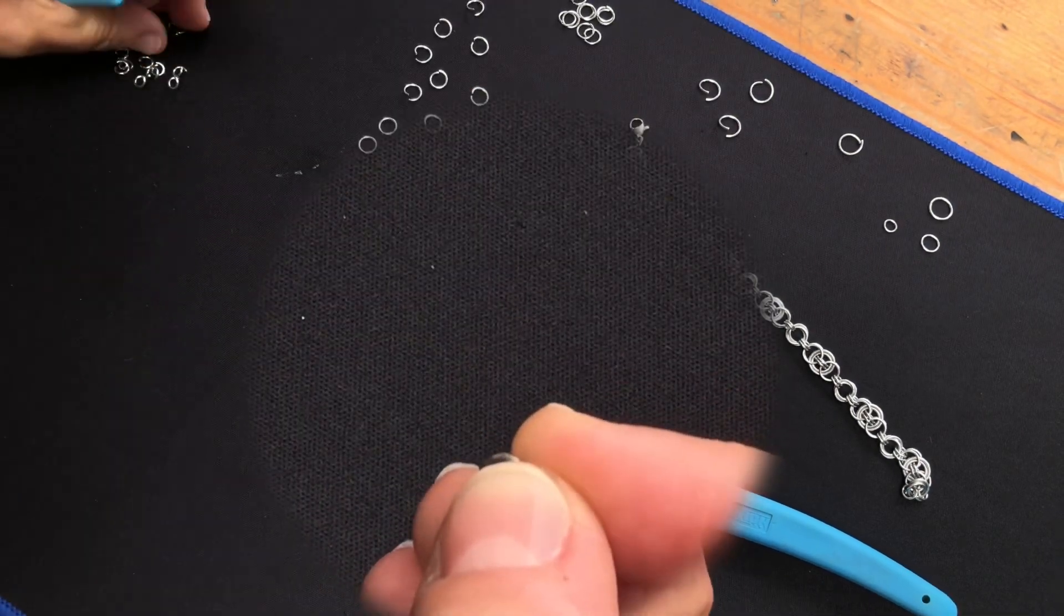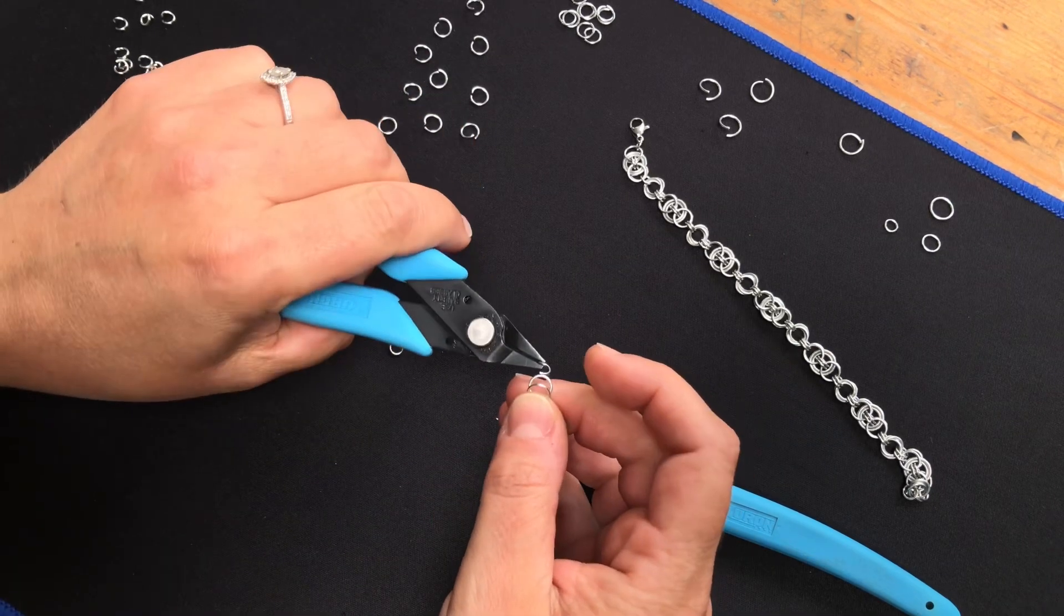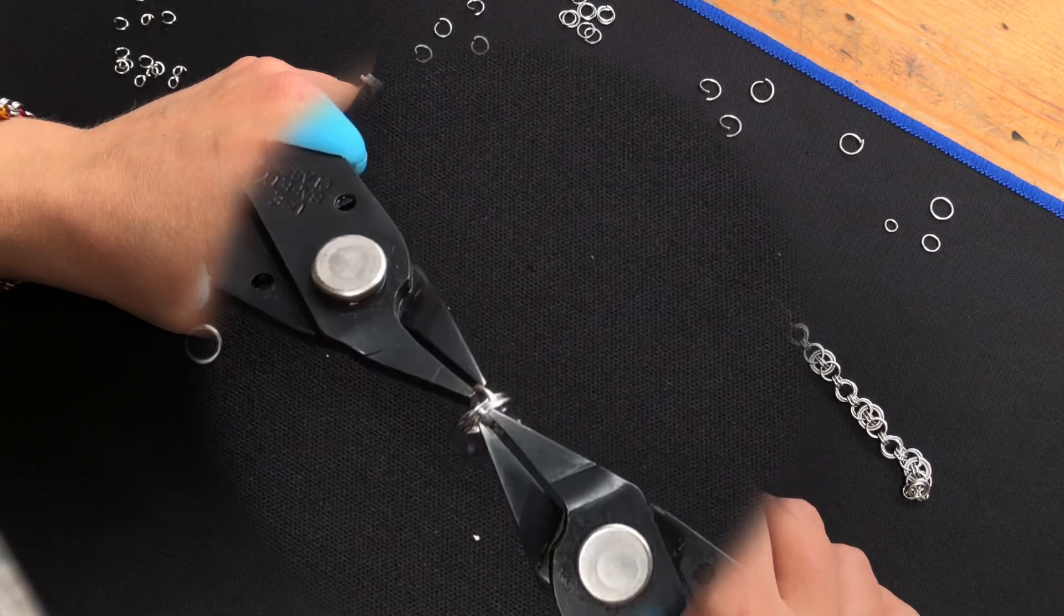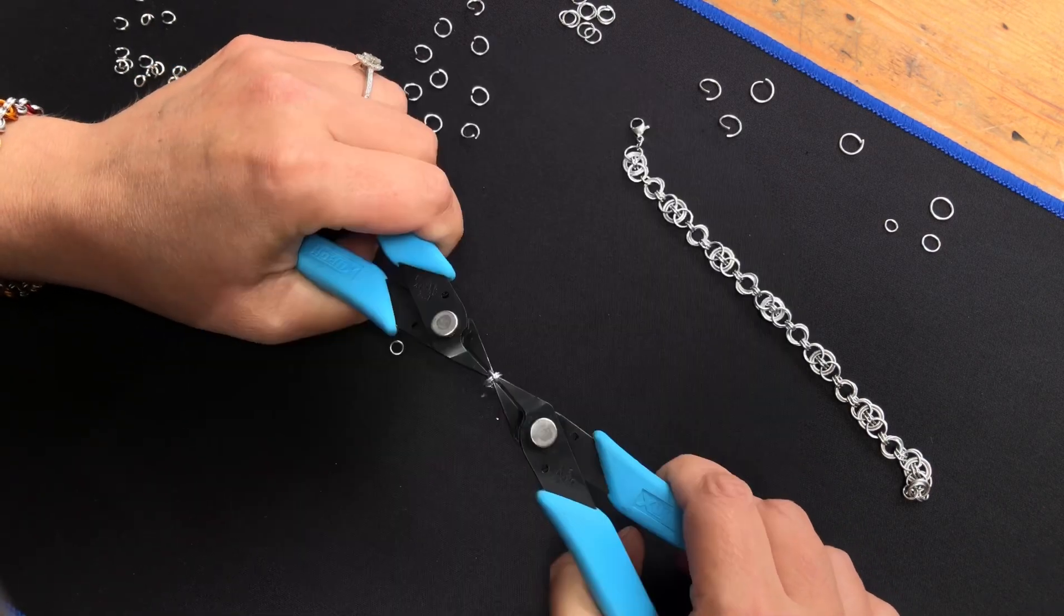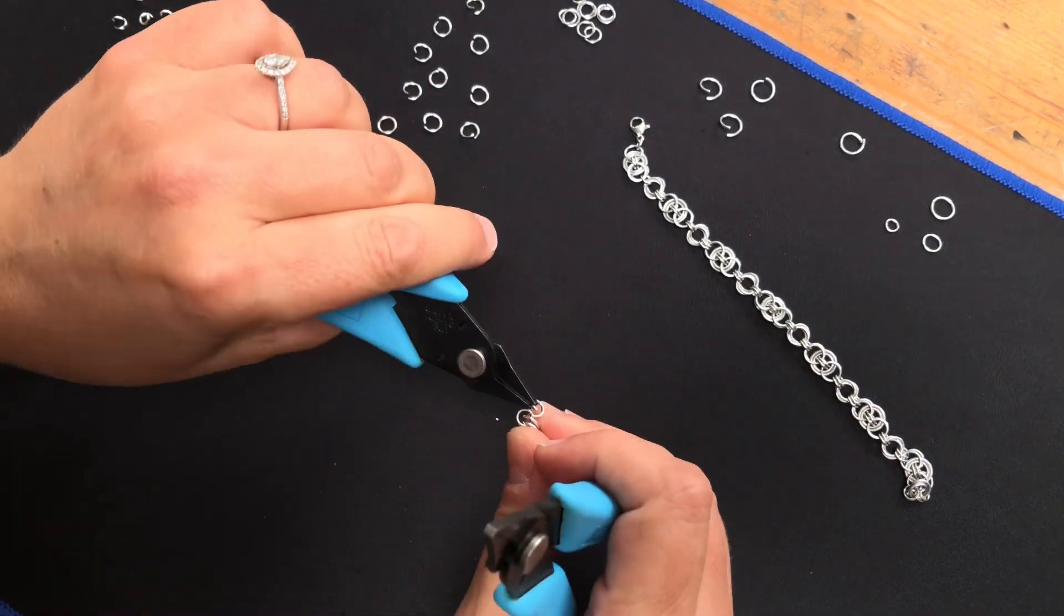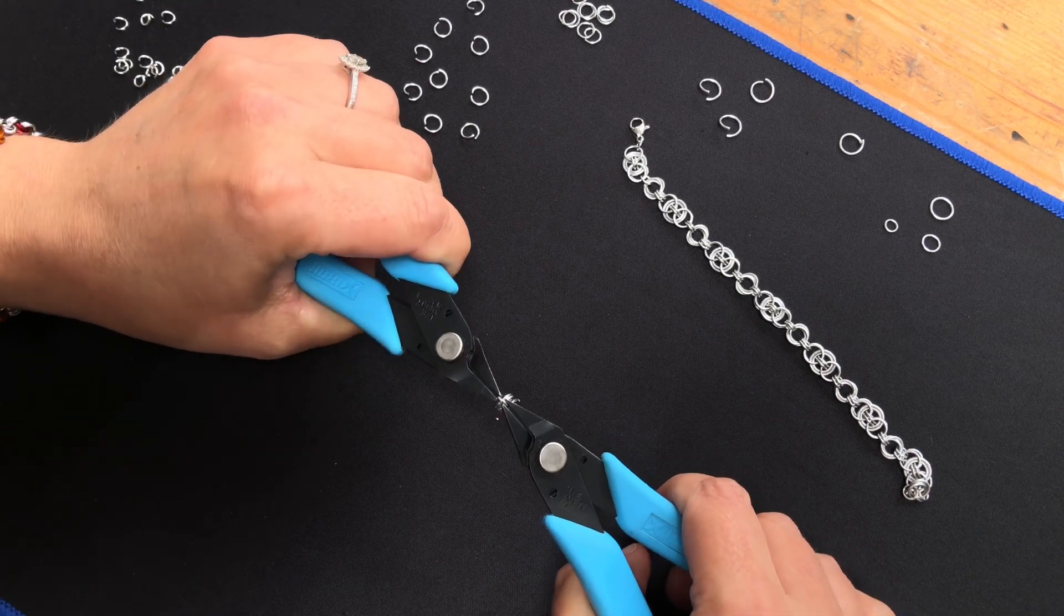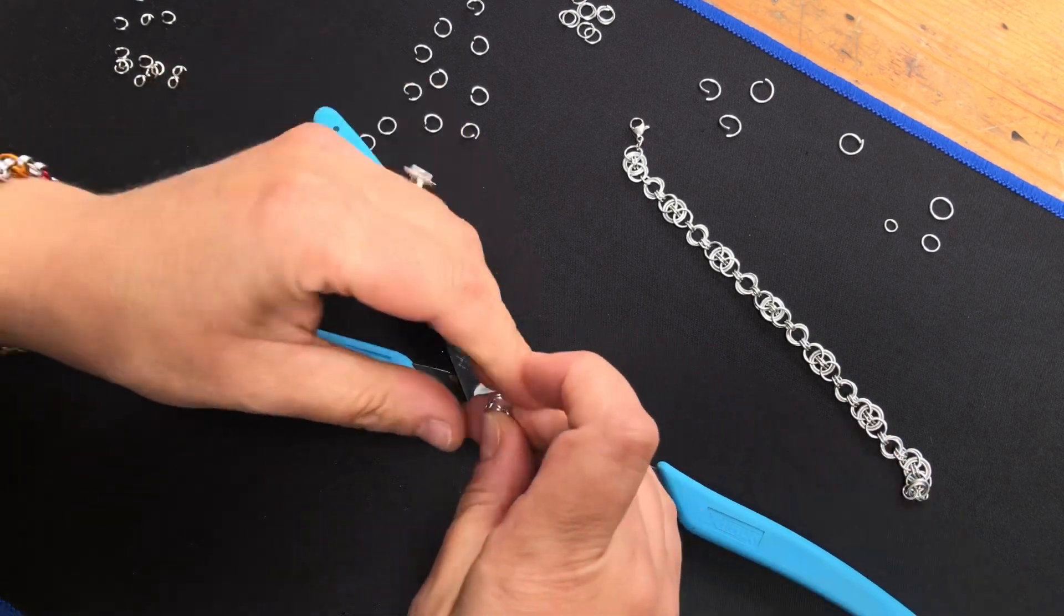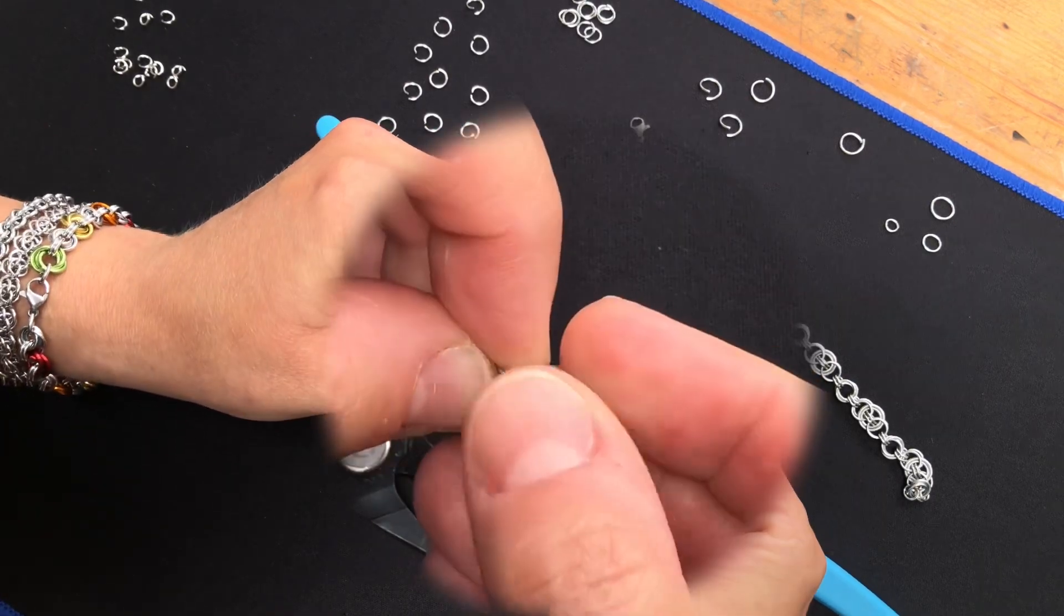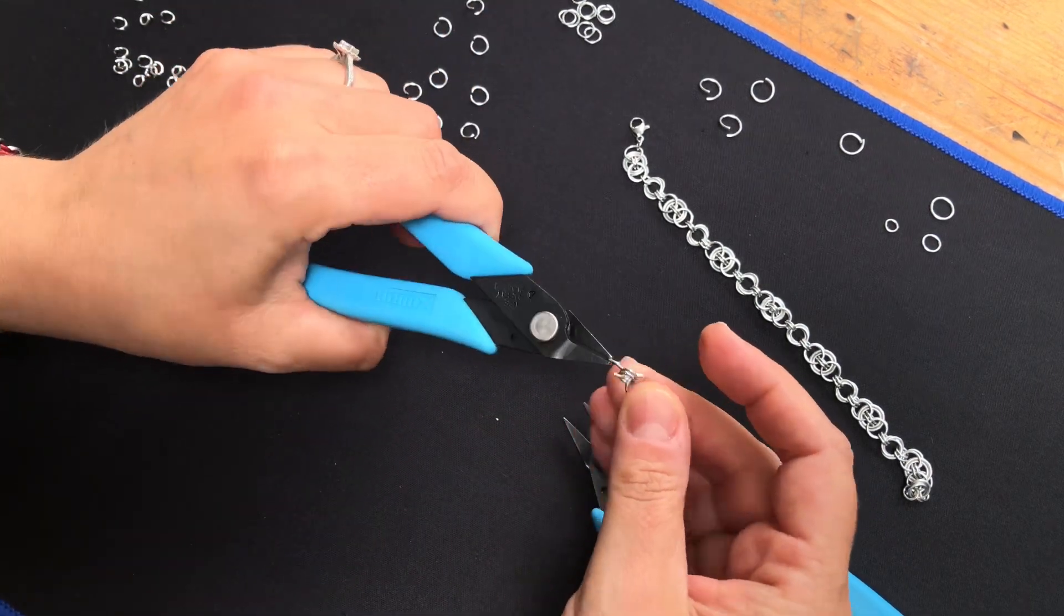And we're going to take two small ones and put them through those medium rings. And then we're going to do the first... No, we're not. I'm lying. We're going to add another two medium rings.